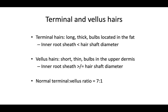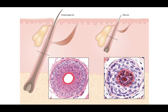In contrast, vellus hair follicles are short, thin bulbs in the upper dermis. The inner root sheath is actually more thick compared to terminal hair follicles. Vellus hair follicles have a very small hair shaft diameter — about the same thickness as the inner root sheath. The normal terminal to vellus hair ratio is approximately seven to one. Understanding alopecia requires actually looking at hair follicles and correlating with clinical pictures.